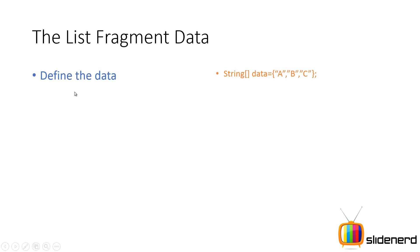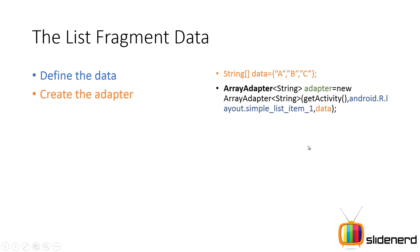First, define the data — that can be string data like ABC. Then create the adapter. I've discussed the syntax of adapters in my other videos on ListView. Here you simply have the first parameter as getActivity, which is the context, the second parameter is the appearance of a single row or a single item inside your ListView — it just contains a TextView — and the third parameter is the data itself.